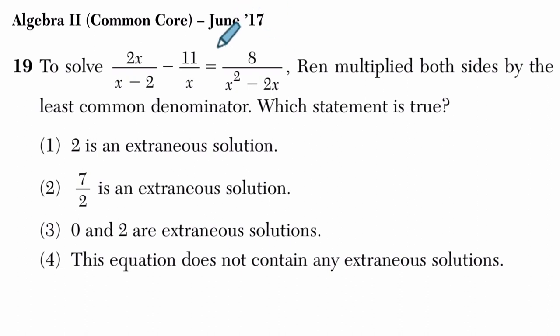Alright, so we've got some rational expression where there's fractions, and in the fraction denominators are variables. We're told that a student multiplied both sides by the least common denominator. We want to know which of these is true. So before we even look at these choices,